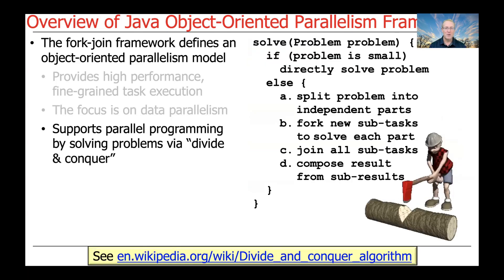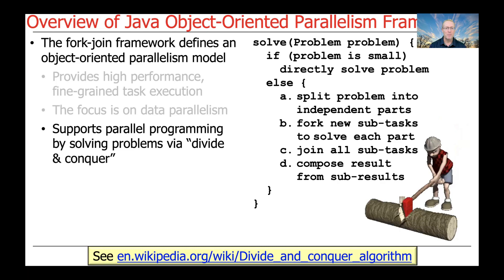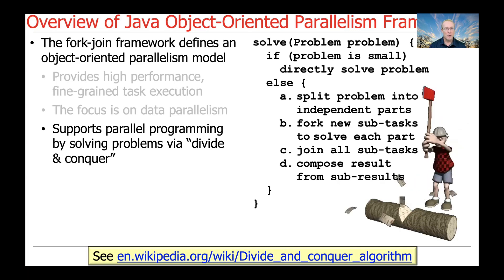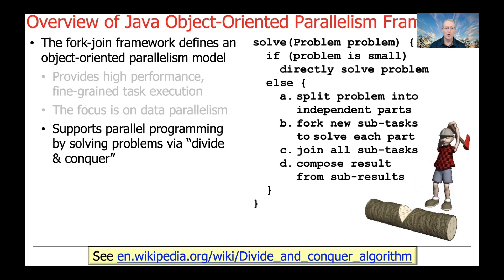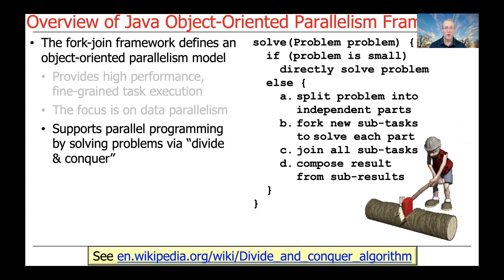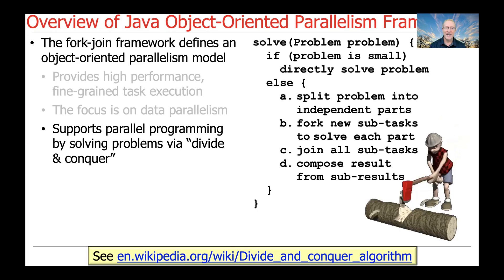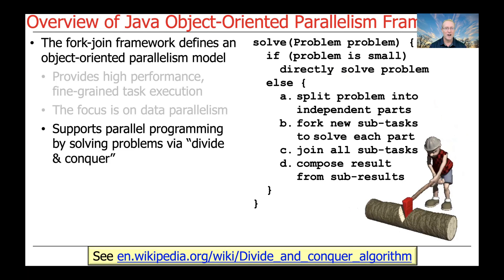Parallelism is supported with the fork-join framework by solving problems using a divide-and-conquer technique. You're probably familiar with this from algorithms courses for various sorting algorithms such as quicksort or mergesort, which are based on a divide-and-conquer approach. In the context of the fork-join framework, the divide-and-conquer approach works as follows.